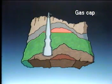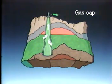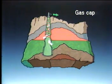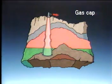As oil is produced from the oil zone, the gas cap expands. As it moves downward and invades the producing oil zone, wells will begin to produce increasing amounts of gas, and ultimately only gas.